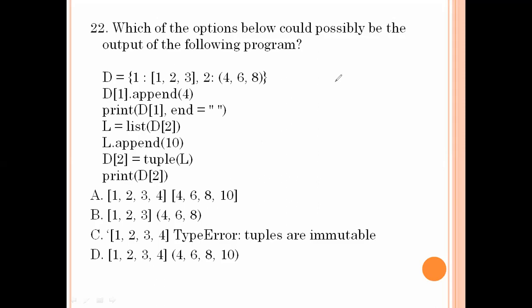Which of the options could possibly be the output of the following program? Using d1.append multiple times, then d2. Only 1, 2, 3 is not the correct answer. 1,2,3,4,6,8 — here after appending 4 we get 4, and adding 12 gives 10 along with 4,6,8. Option number D is the right answer.